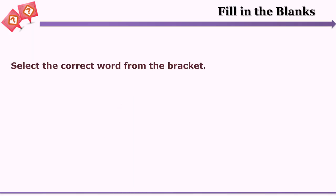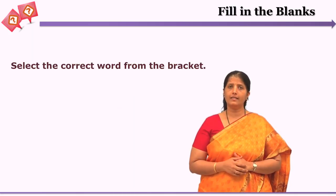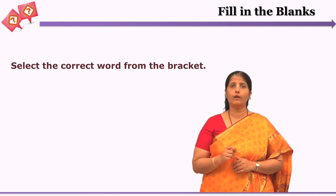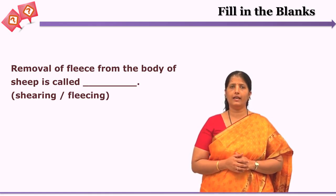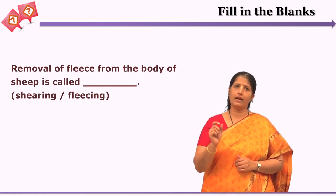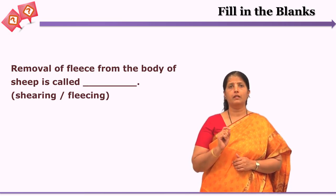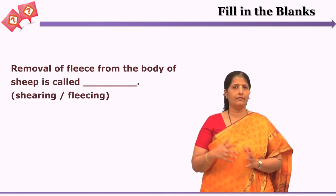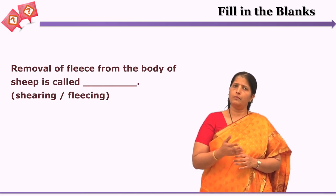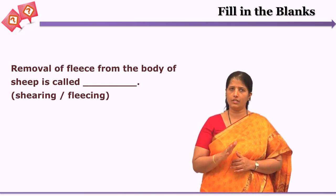One form is: 'Select the correct word from the bracket.' These are very useful for testing language skills. For example: 'Removal of fleece from the body of sheep is called ___ (shearing / fleecing).' The learner must select one answer. The correct answer is shearing, while fleecing is a distractor — if the learner does not know the process is called shearing, they may incorrectly select fleecing.